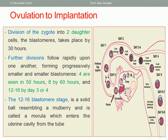Division of the zygote into two daughter cells — the blastomeres — takes place by 30 hours. Further divisions occur rapidly, forming progressively smaller and smaller blastomeres, shifting from two-cell to four-cell to eight-cell stage, then to morula stage with 12 to 16 blastomeres by day three or four.